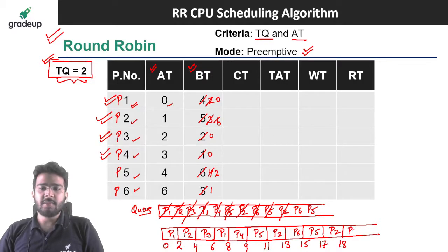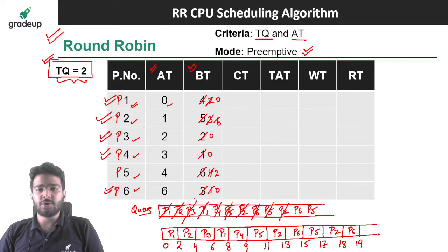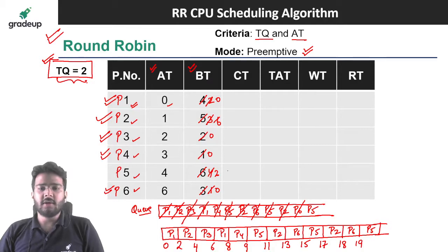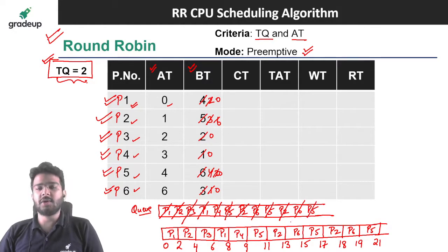Now we schedule P6 — remaining burst time is 1, so we schedule for 1 unit from 18 to 19. P6 completes and is dequeued. Finally, only P5 remains. We schedule it for the remaining burst time of 2 units, from 19 to 21. P5 completes its execution and is dequeued.